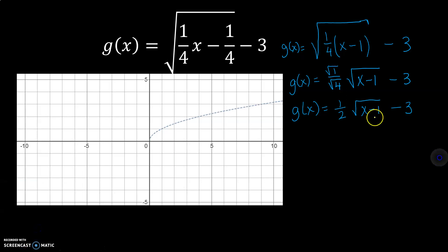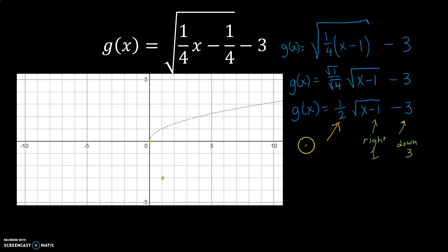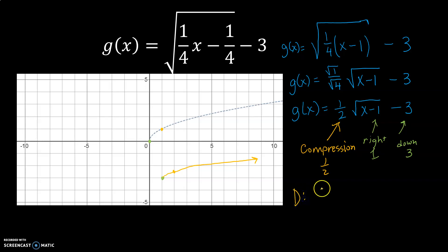What I have in the end is a translation of right 1 and down 3, so my (0, 0) point goes right 1 and down 3 to a new point. I also have a compression of one-half, since it's less than one. Normally my point goes up 1 when I go right 1, but this time I go right 1 and only up one-half. The new graph has the same shape as the parent but compressed. The domain is from 1 to infinity, and the range is from negative 3 to infinity.